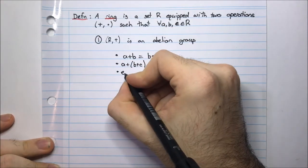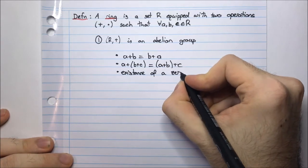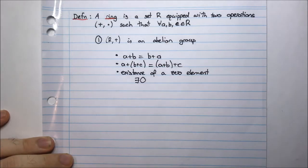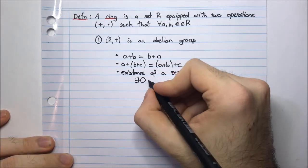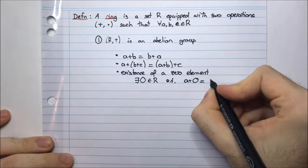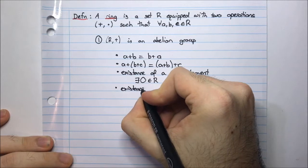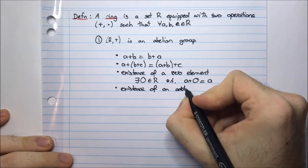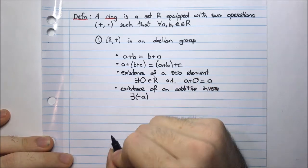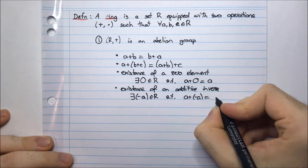We also have the existence of a zero element, which means there exists some element we denote by zero — but it doesn't necessarily mean the real number zero, it's just a symbol. There exists a zero element in R such that A plus zero equals A. We also need the existence of an additive inverse: there exists some element denoted by minus A in R such that A plus minus A equals zero, the zero element.